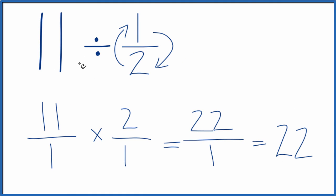So when we divide 11 by 1 half, we get 22. If you multiply 22 by 1 half, you'll get 11. This is Dr. B.